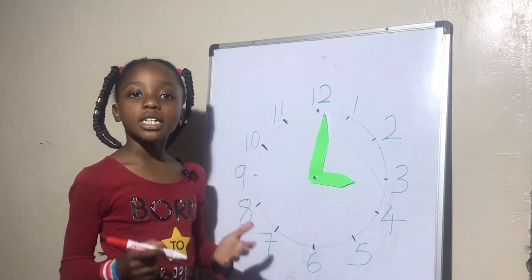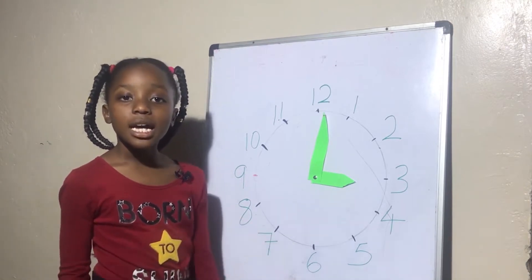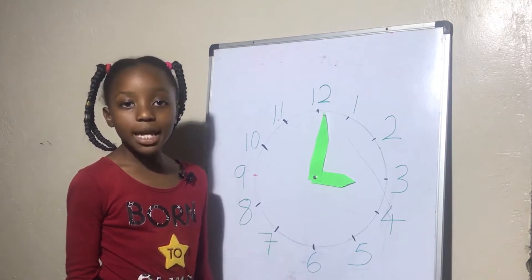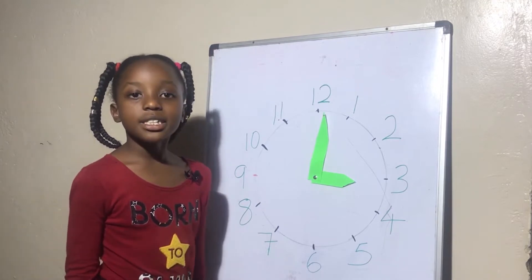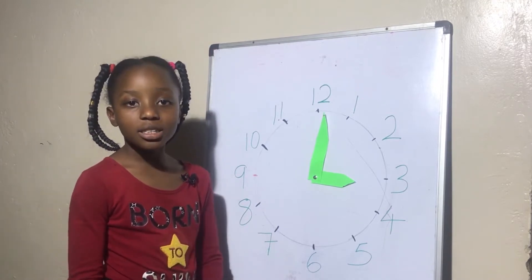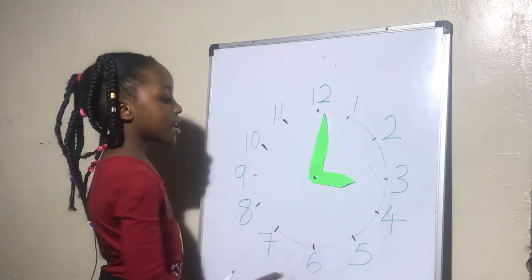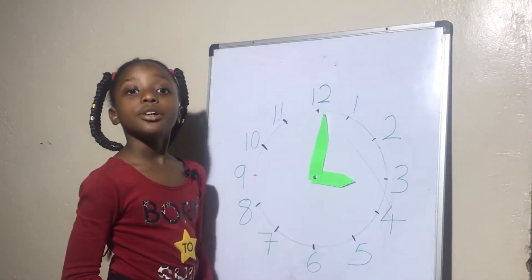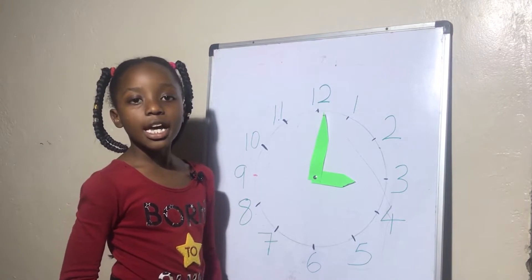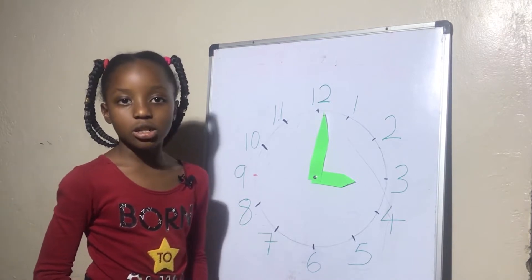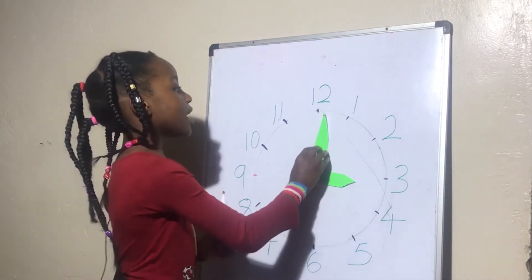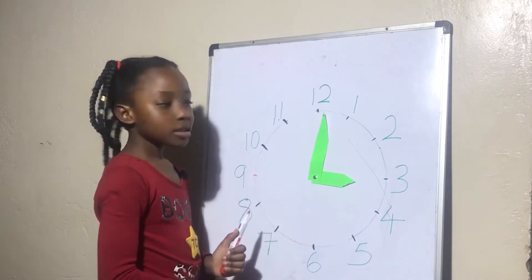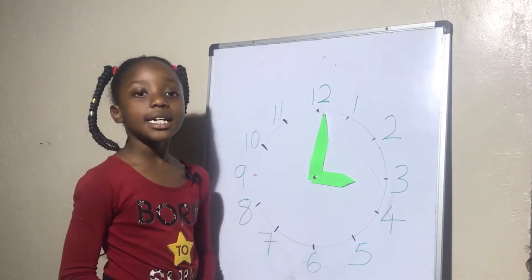Let's first understand what time is. Time is the ongoing sequence of events taking place. You can tell time using clocks. Here I have an analog clock, and we have two types of clocks — an analog clock and a digital clock. Today we'll be learning about an analog clock. Now let's tell time.